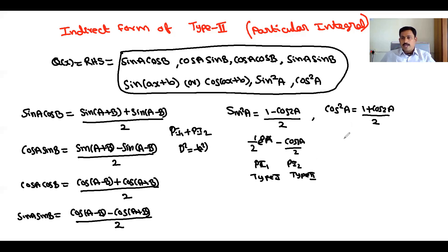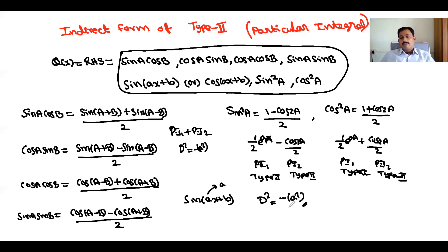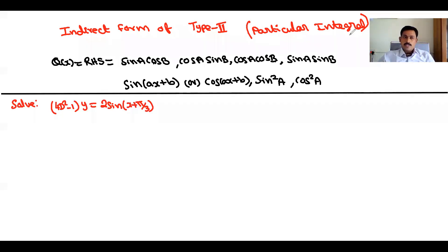Similarly, if it becomes cos²A, we write cos²A = (1 + cos2A) / 2. The 1/2 is Type 1 and the cos2A / 2 is Type 2, so PI₁ is Type 1 and PI₂ is Type 2. If you are getting the sin(Ax+B) form, you can directly take the A value and replace d² by −A² and solve the problem.